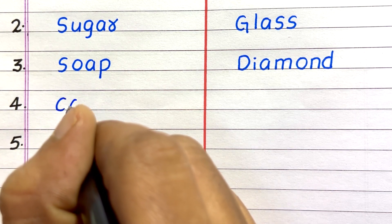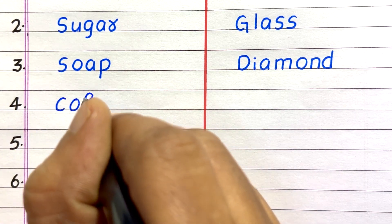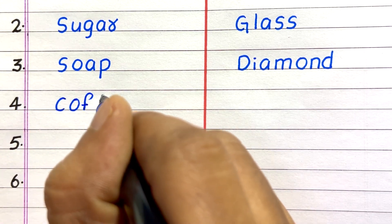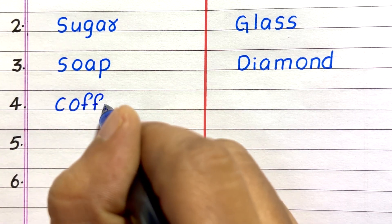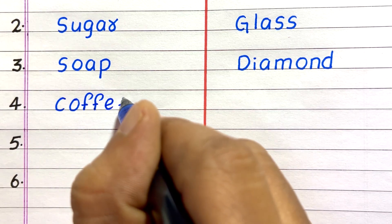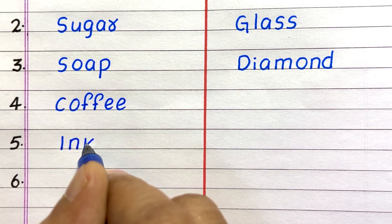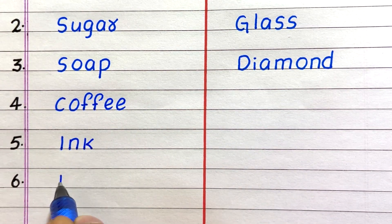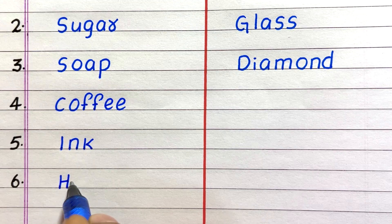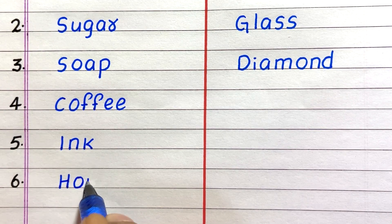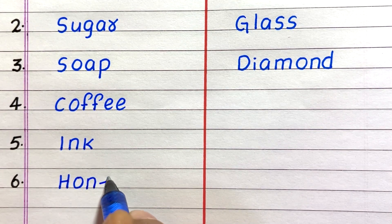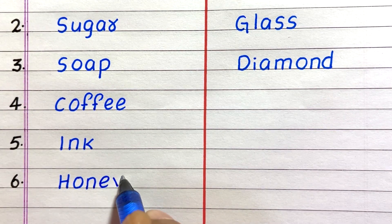Fourth example of a soluble substance is coffee. Fifth, ink. Sixth, honey.